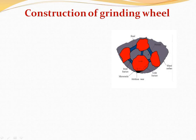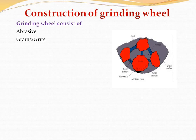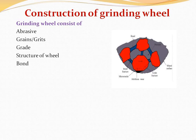अब हम discuss करते हैं construction of grinding wheel। Grinding wheel बना होता है abrasive, grains, grade, structure of wheel और bond से। किसी grinding wheel की surface पर ये सभी grains होते हैं जो किसी न किसी abrasive particle से बने होते हैं। सभी grains को जोड़ने के लिए bond का use किया जाता है। इसी सब को ध्यान में रखते हुए grinding wheel बनाया जाता है।